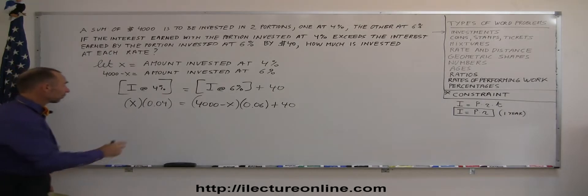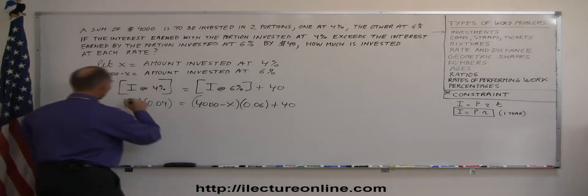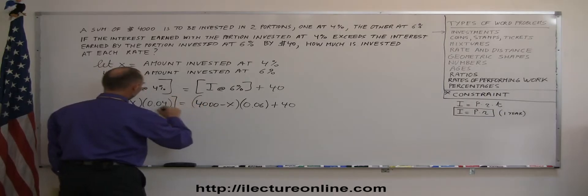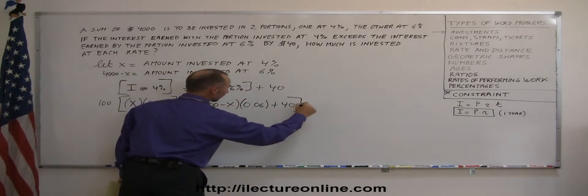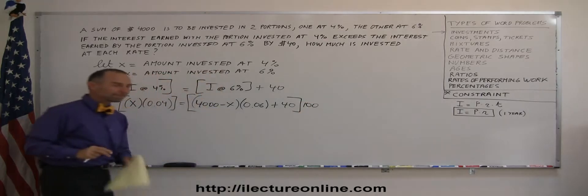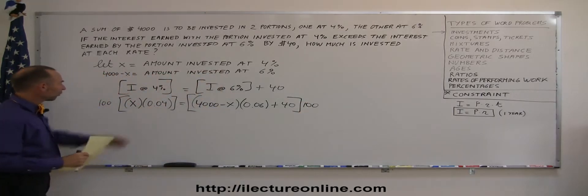The first thing I would like to do is get rid of the decimals. So, multiply both sides by 100. So, the left side by 100.